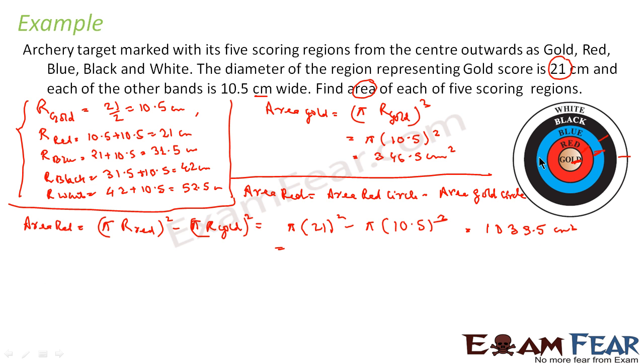Similarly, if you want to find, let's suppose, area of blue band, blue band, let me use this word correctly, area of blue band. This will be nothing but, area of blue circle, minus, area of red circle. Correct?